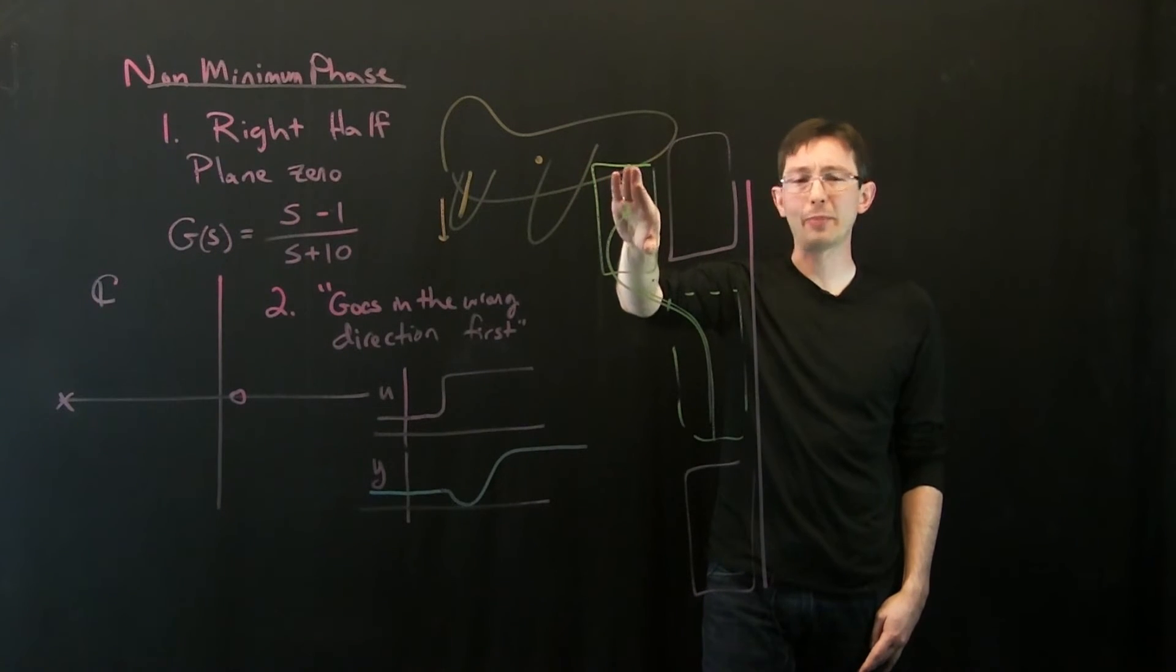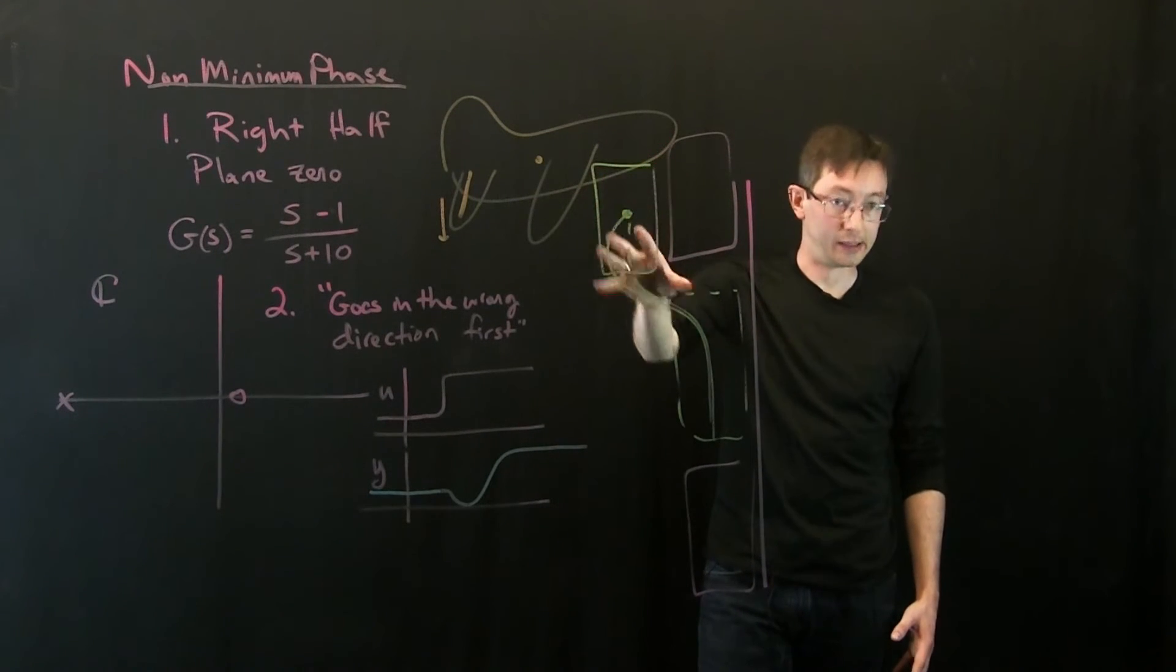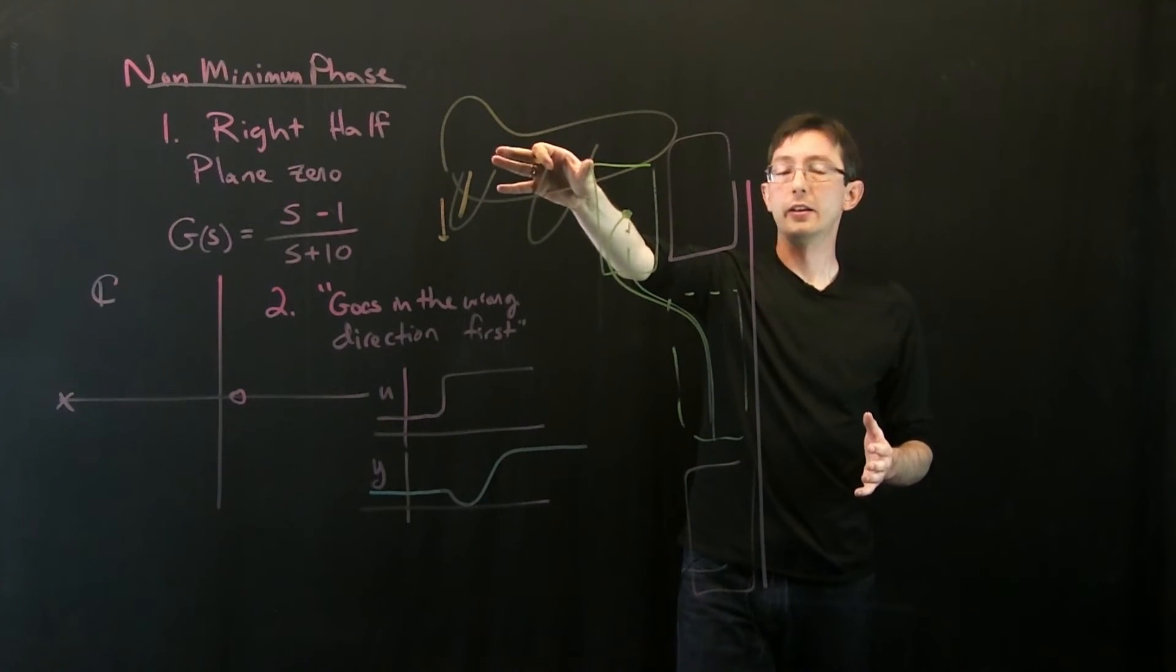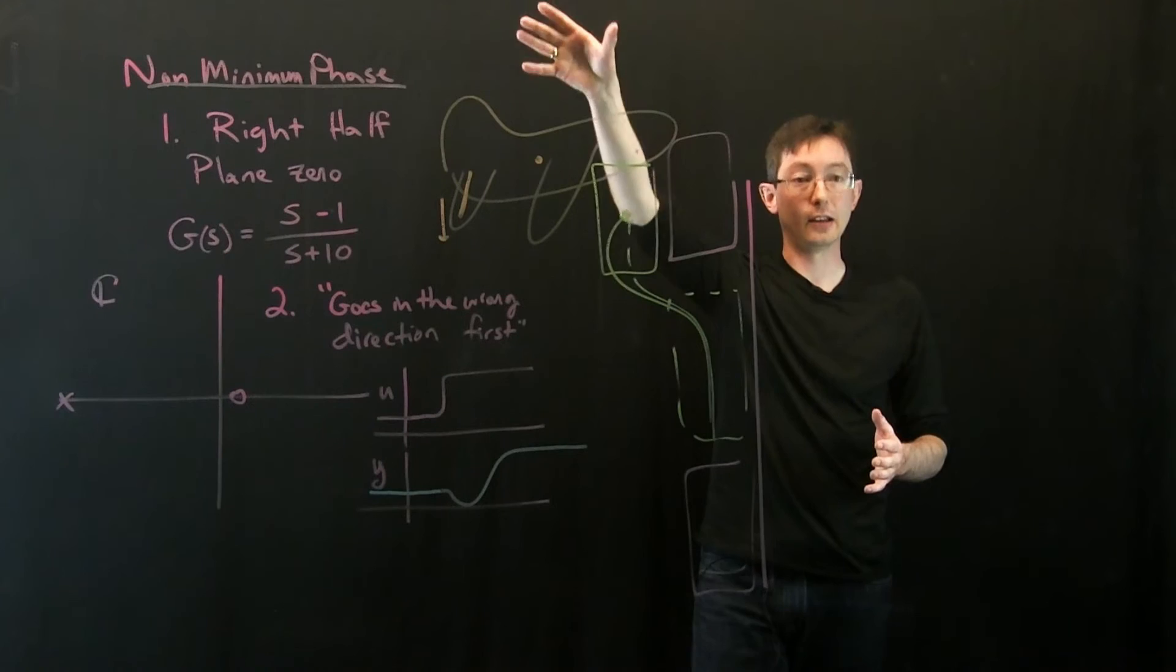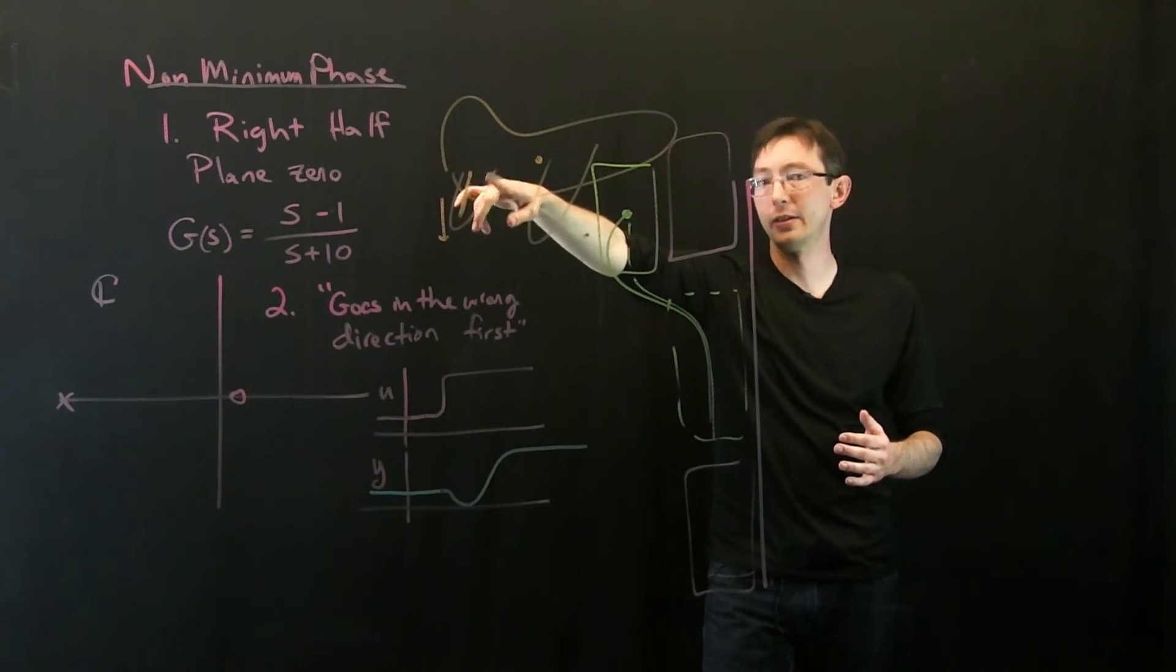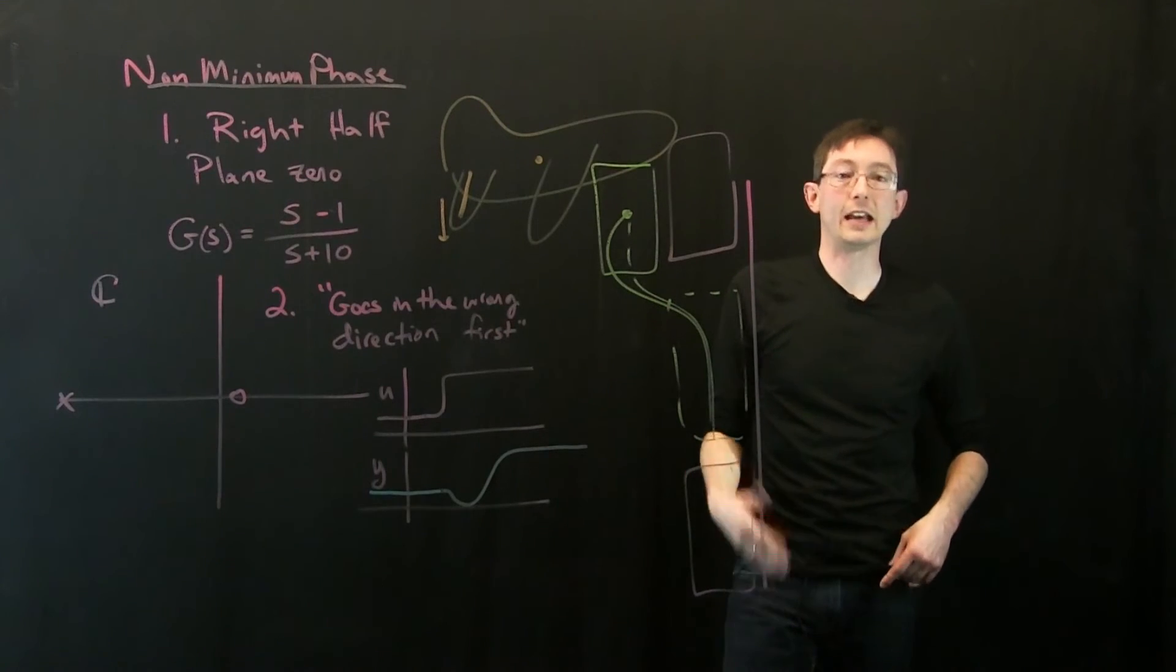Okay? So, you know, parallel parking is a slow procedure. You don't like do a super fast parallel parking. The, you know, airplane altitude gain is not a super aggressive, you know, it's not aggressive on the order of tenths of a second.